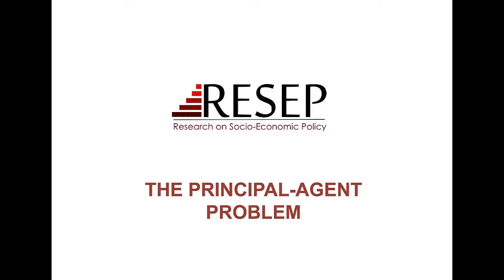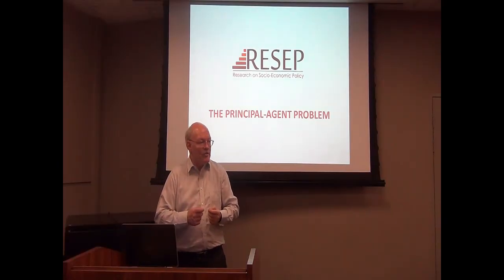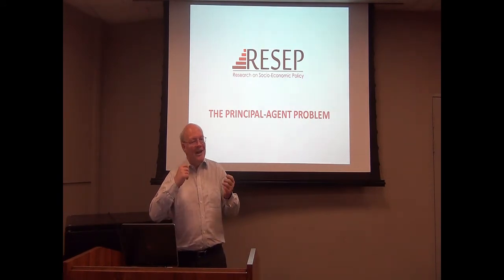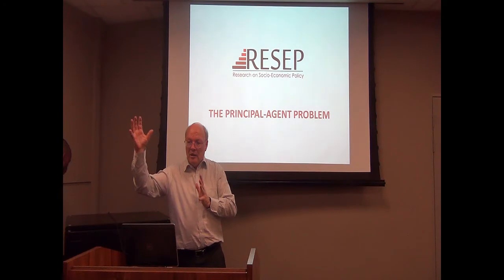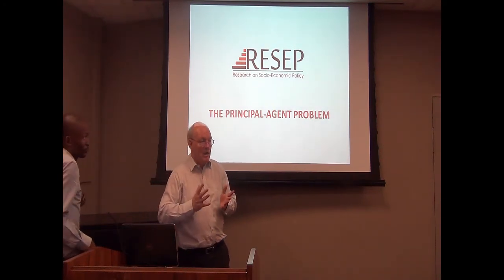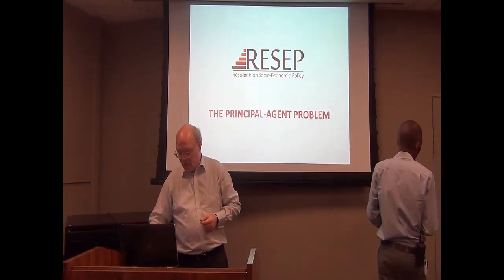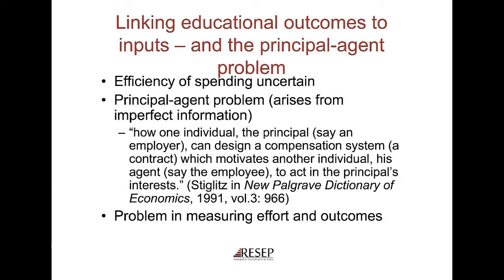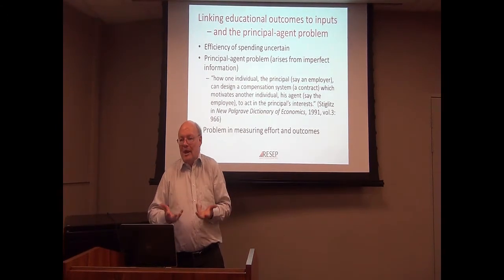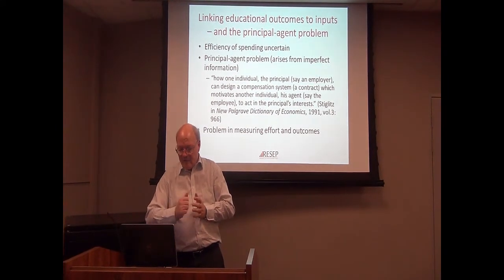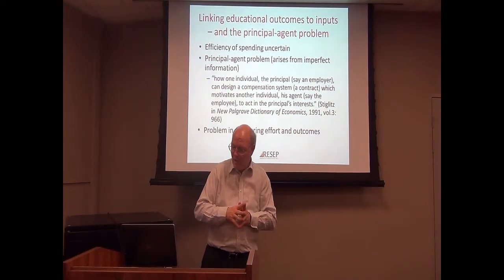Let's get to the principal-agent problem, which is the way that people in social sciences — in economics but also in other social sciences — think around this issue of getting somebody to do something on your behalf. Parents are asking the school system to do something on their behalf; the state is asking the schools to provide something on their behalf.